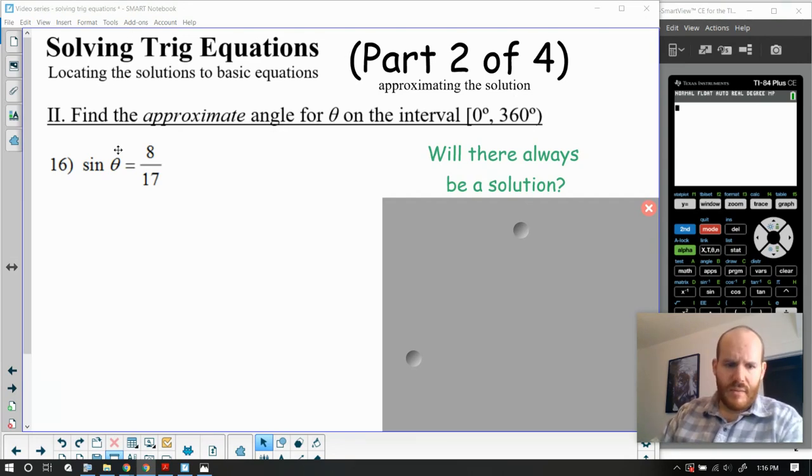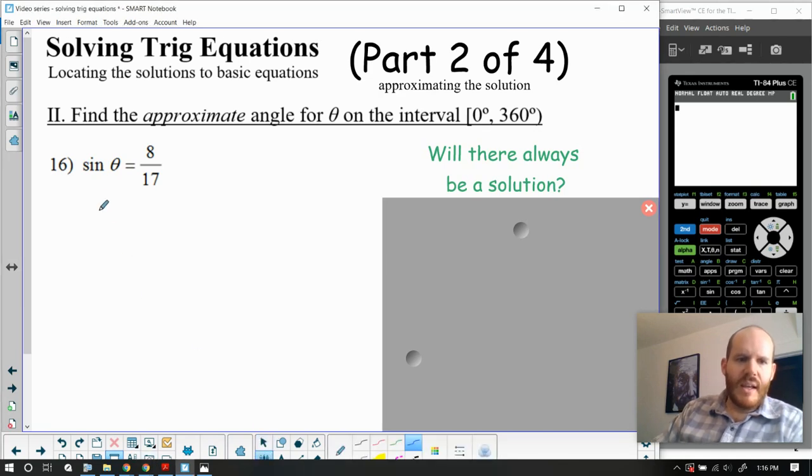So we're going to dive right in with the first example here, which is sine of theta equals 8/17ths. Now the process that we're going to use here is very similar to the process we used in part one of this video series. We are again going to consider in which quadrants the solution could lie.